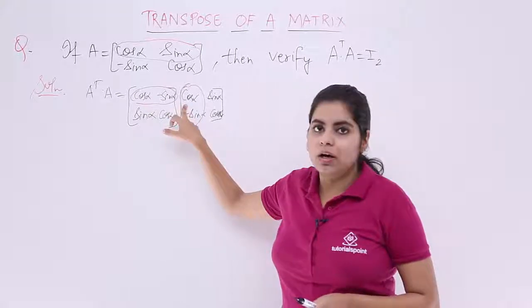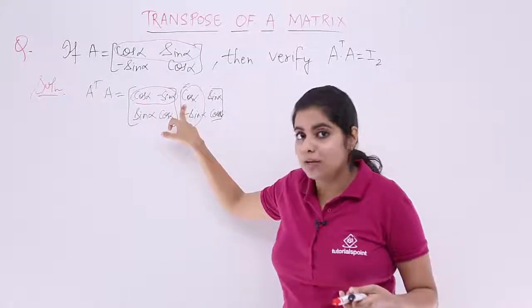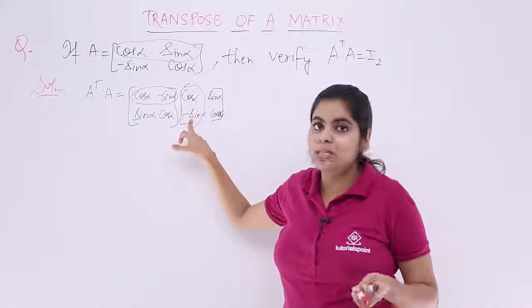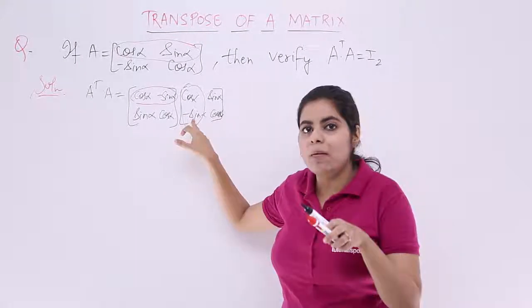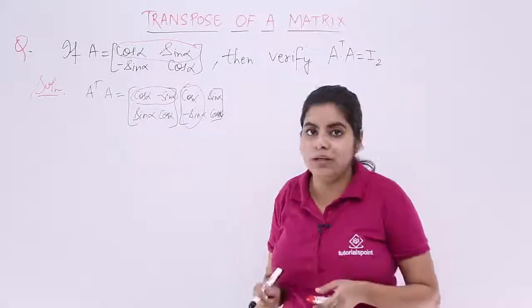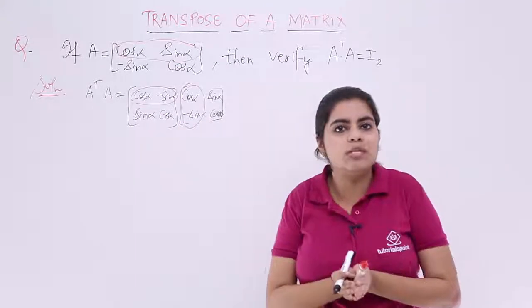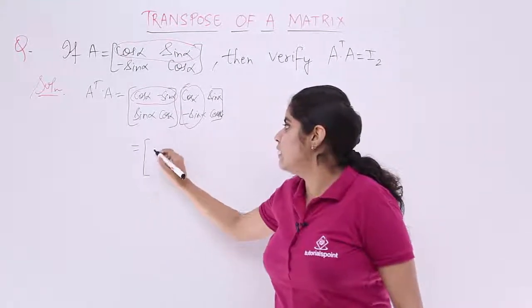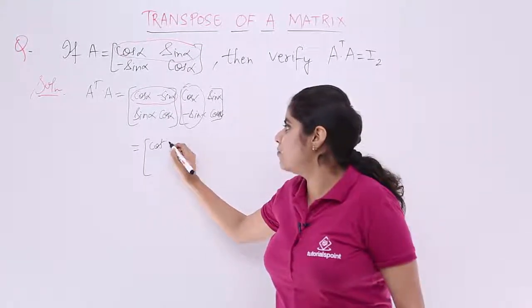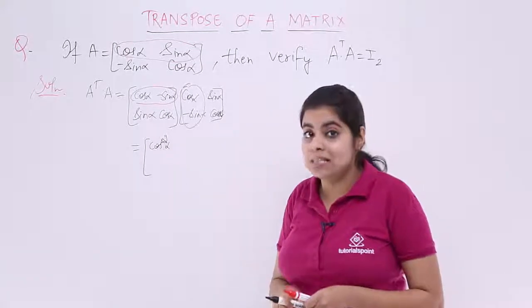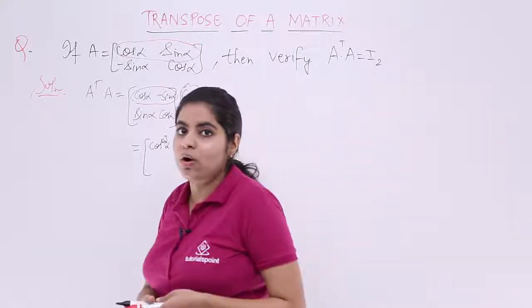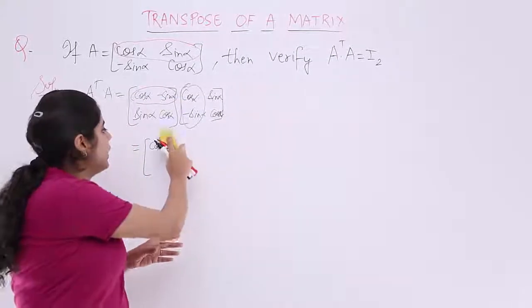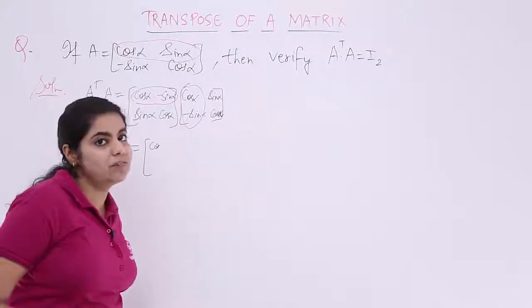So cos alpha cos alpha multiplication means cos square alpha, minus sin alpha minus sin alpha. So it means plus sin square alpha. So cos square alpha plus sin square alpha is what we get. Now you already know cos square theta plus sin square theta is one. So basically what we get is cos square alpha plus sin square alpha which will give me one.